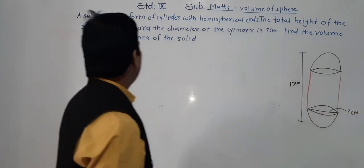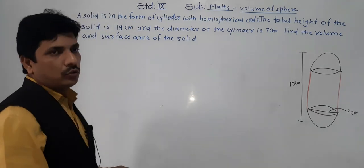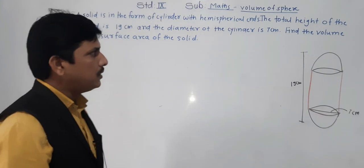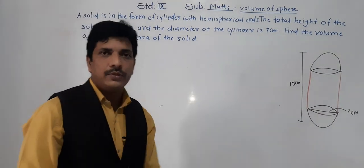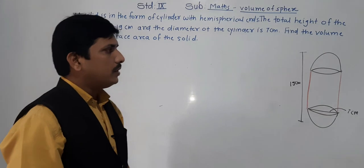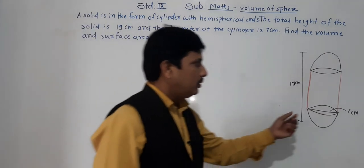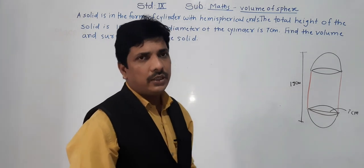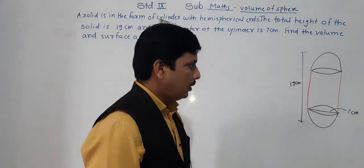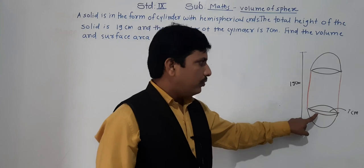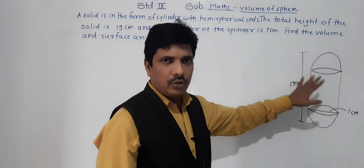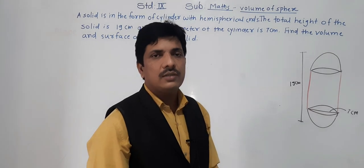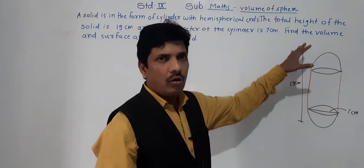We need to find the volume and the total surface area of this figure. The diameter of the cylinder is given as 7 cm, so the radius will be 7/2, that is 3.5 cm. The diameter of the cylinder and the diameter of the hemispheres will be the same, so we can consider the same radius for all three figures — the cylinder and the two hemispheres.